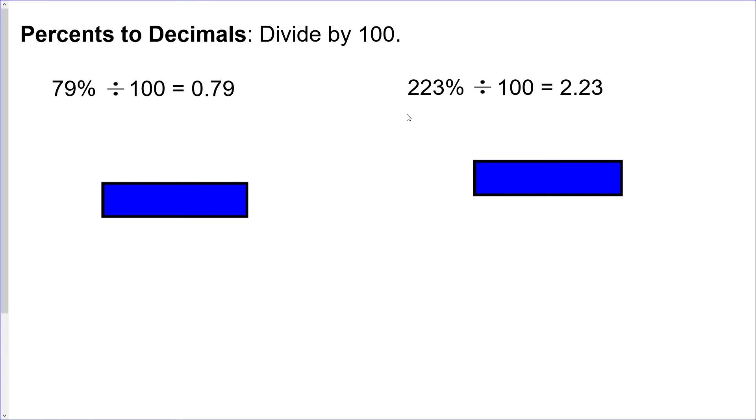Again, if you have a percent that is bigger than 100, which 223 is certainly bigger than 100, you should end up with a number other than zero in front of the decimal. As we talked about much earlier in the year, technically you don't have to put the zero in front of the decimal, but I really encourage you to do that.